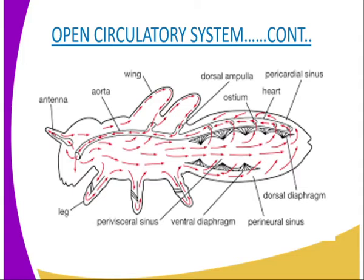The anterior segment is joined to the aorta that empties the haemolymph into sinuses in the head. You can see in the diagram the head and the sinuses. The arrow on our diagram represents the direction of flow of the haemolymph. Each chamber has a pair of lateral openings known as the ostia. The valves allow blood to flow into the heart through the ostia, but not out of it.